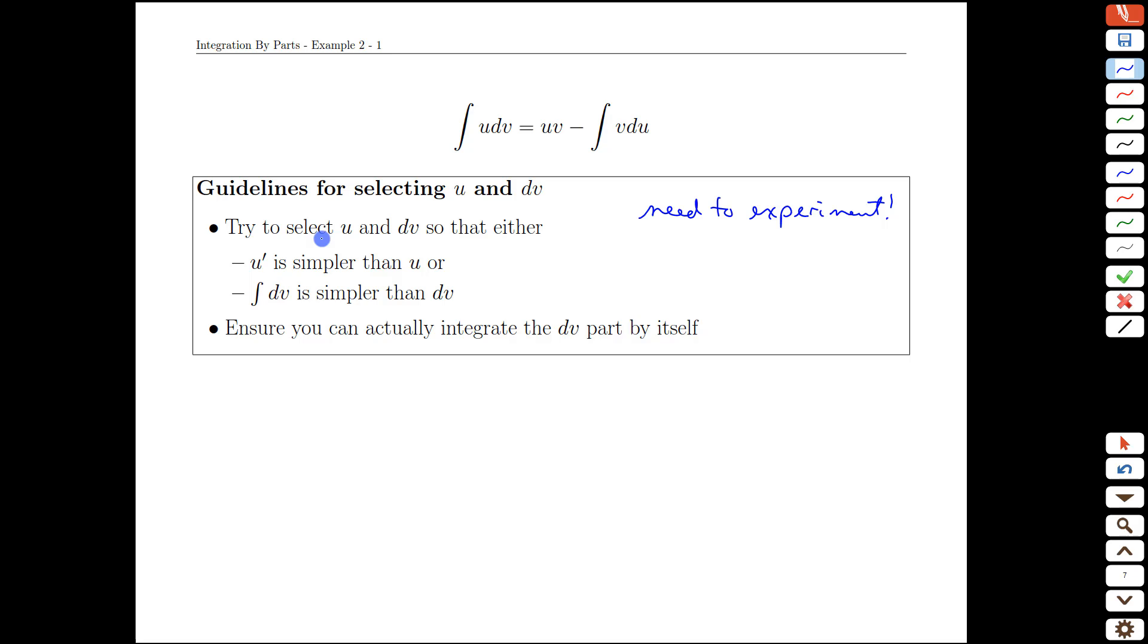With that being said though, there are some guidelines that can be helpful. The first guideline is that you pick your u so that when you differentiate it, which is the next step, that derivative is actually simpler than what you started with. That's usually easy to arrange.